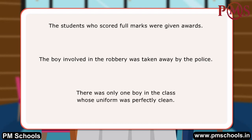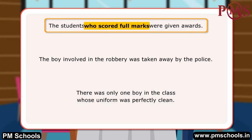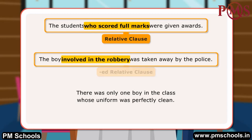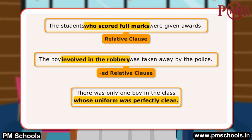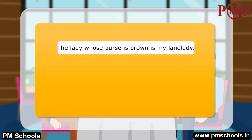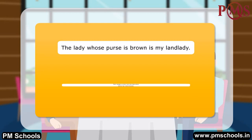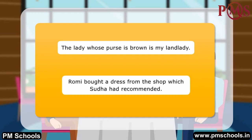There was only one boy in the class whose uniform was perfectly clean. In the first sentence, 'who scored full marks' is a relative clause — we use 'who' when talking about people. 'Involved in the robbery' is an ED relative clause with a passive meaning. 'Whose uniform was perfectly clean' uses 'whose' for people. More examples: 'The lady whose purse is brown is my landlady.' 'Romy bought a dress from the shop which Sudha had recommended.'